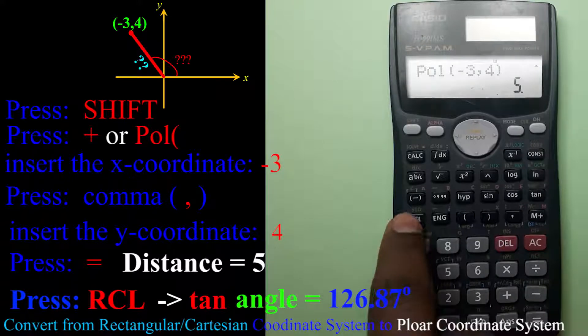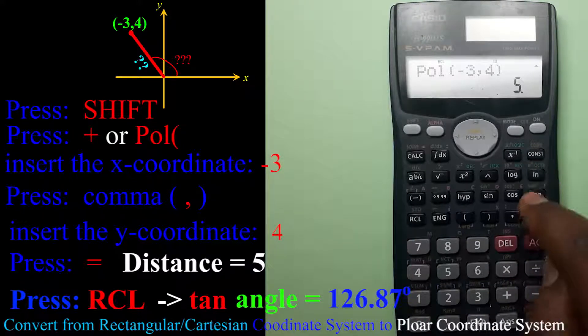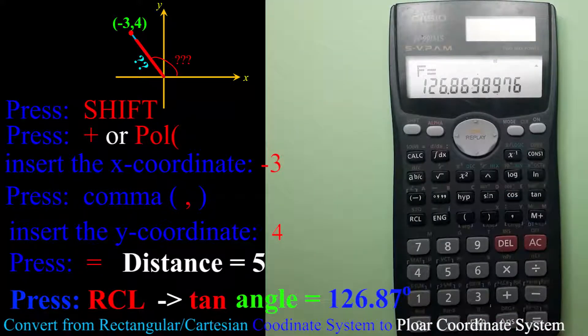Then if I want to know the angle from the positive X axis, I will say RCL then Tan. It gives me 126.87, almost.